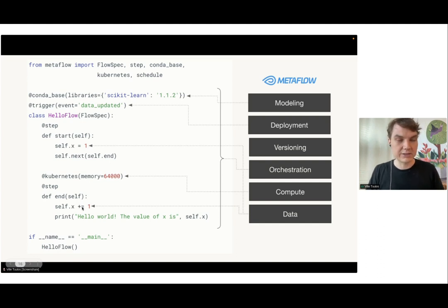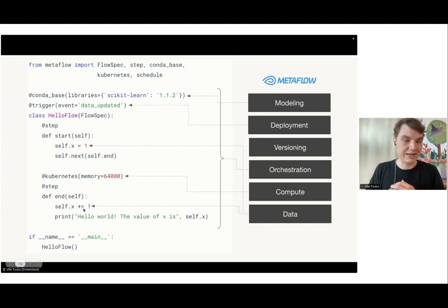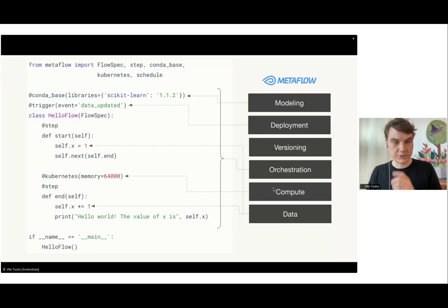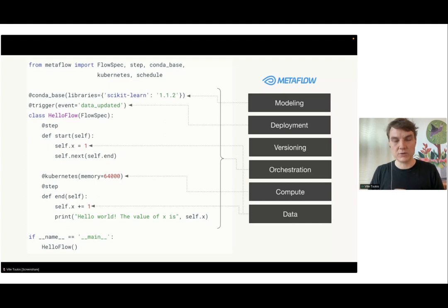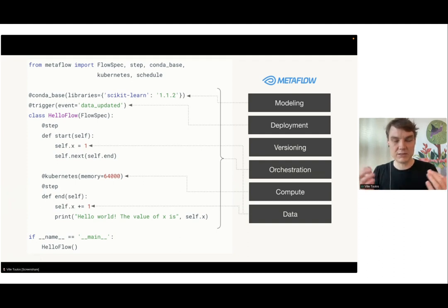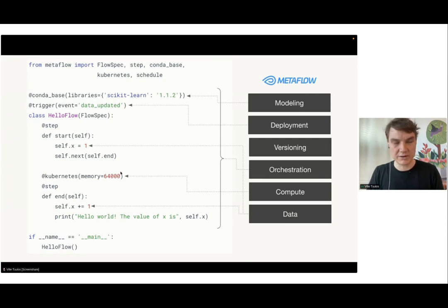For instance, when you do self.x, Metaflow persists it automatically. When you do plus-equals later in the end step, it downloads the previous value and increments it — all the data flow questions happen behind the scenes. One of the key features of Metaflow is really easy access to compute. Many of you might look at this and say 'there are so many workflow orchestrators — how is this different from Airflow, Daxter, Prefect?' The easy differentiator is how you think about and get access to compute.